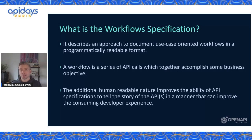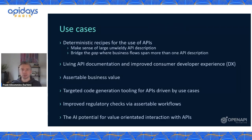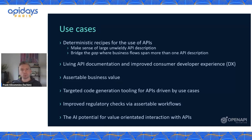Thinking about use cases, we've worked quite hard as a working group to prioritize the different use cases we're focusing on for the first iteration. We really see it as offering the ability to provide deterministic recipes for the use of APIs — be that to make sense of large unwieldy API descriptions that might have 10, 20, even 50 or 100 different endpoints, but also bridging the very common scenario where business flows span more than a single API document. We think workflows can improve the ability to have what we call living API documentation.